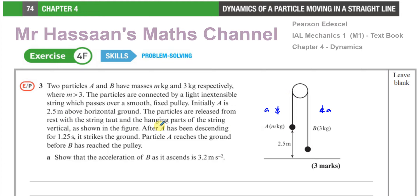Because M is greater than 3, when the system is released, A will accelerate downward and B will accelerate upward. Initially A is 2.5 metres above the horizontal ground. The particles are released from rest with the string taut and the hanging parts vertical. After A has been descending for 1.25 seconds it strikes the ground. Particle A reaches the ground before B has reached the pulley.